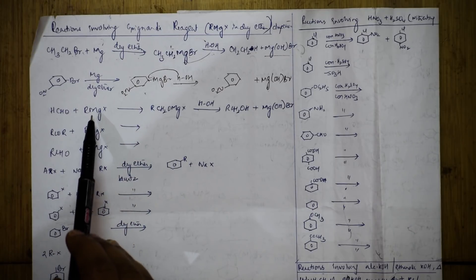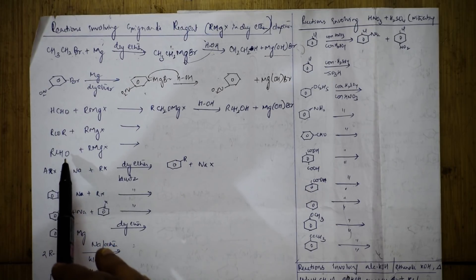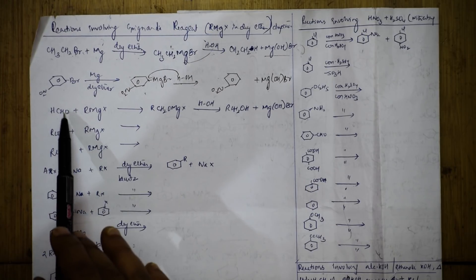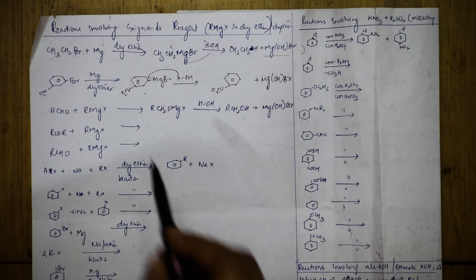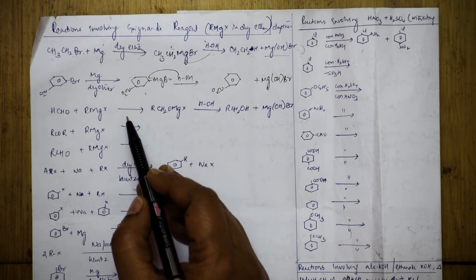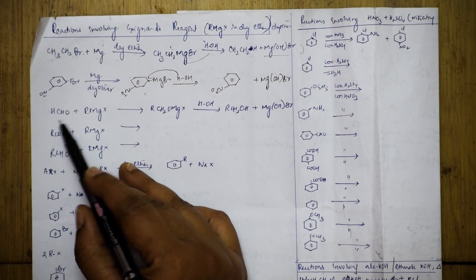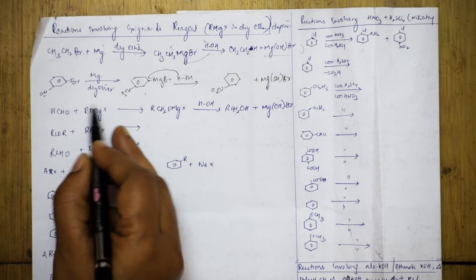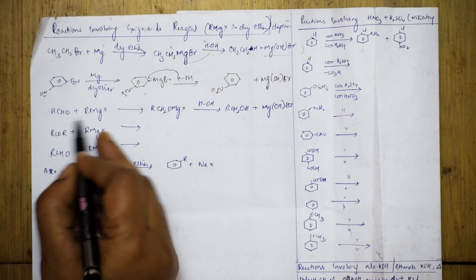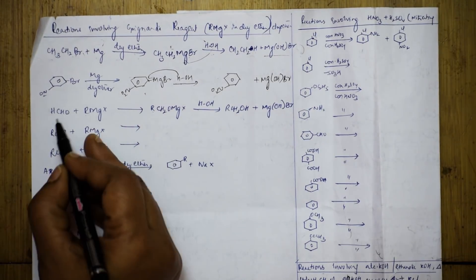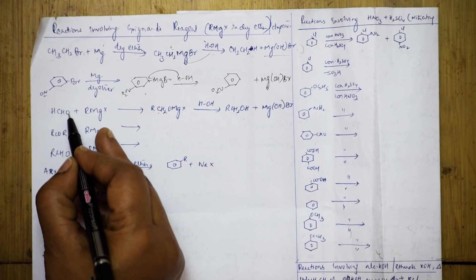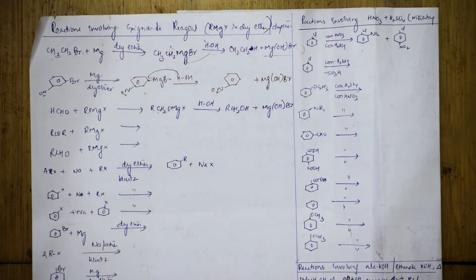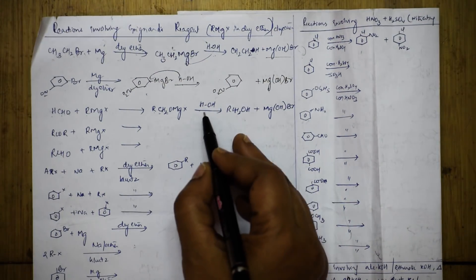Now, here in the second reaction - I have already shown this in an earlier video. Grignard's reagent is going to add to aldehyde, ketones, as well as formaldehyde and acetaldehyde. Now directly, let us see the reaction. You have formaldehyde. This whole Grignard is adding to formaldehyde, giving R-CH₂-OMgX.